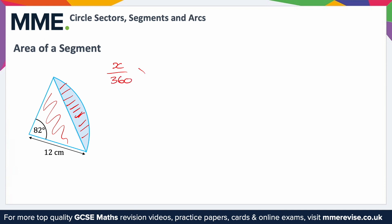For the triangle we're going to use the formula: half × a × b × sin(C). So the area of the segment equals the area of the sector minus the area of the triangle.